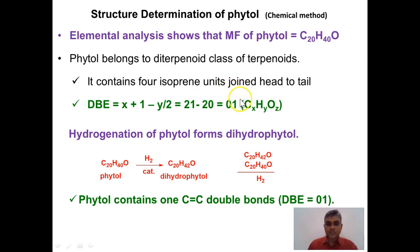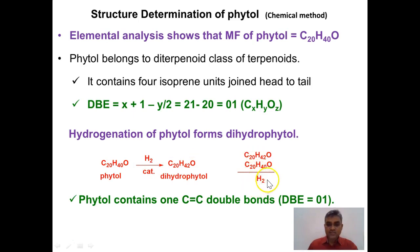We need to prove the nature of this one degree of unsaturation, and for that a simple experiment is performed. Hydrogenation of phytol is carried out in the presence of a catalyst. It is found that hydrogenation forms dihydrophytol with molecular formula C20H42O. Subtracting the molecular formula of phytol from dihydrophytol, only one molecule of hydrogen is consumed, which concludes that phytol contains one carbon-carbon double bond.